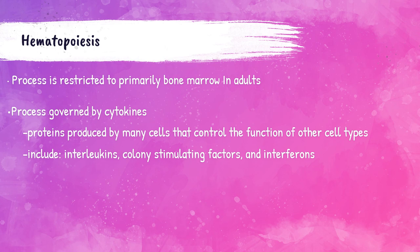Other hematopoietic tissues include the lymph node, the spleen, liver, and the thymus. But again, in adults, hematopoiesis is mainly occurring within the bone marrow.